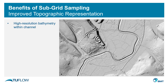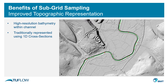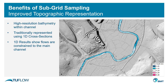There are three main benefits to the use of subgrid sampling. The first is improved topographic representation when using mesh cell sizes larger than the DTM cell size. For example, in this case we have high-resolution topographic data for both the floodplain and the river channel. Traditionally we may have used 1D cross sections to represent this, however such an approach requires time-consuming model schematization. Nonetheless, we undertook this and modeled a particular event which shows the flows constrained to the main channel.